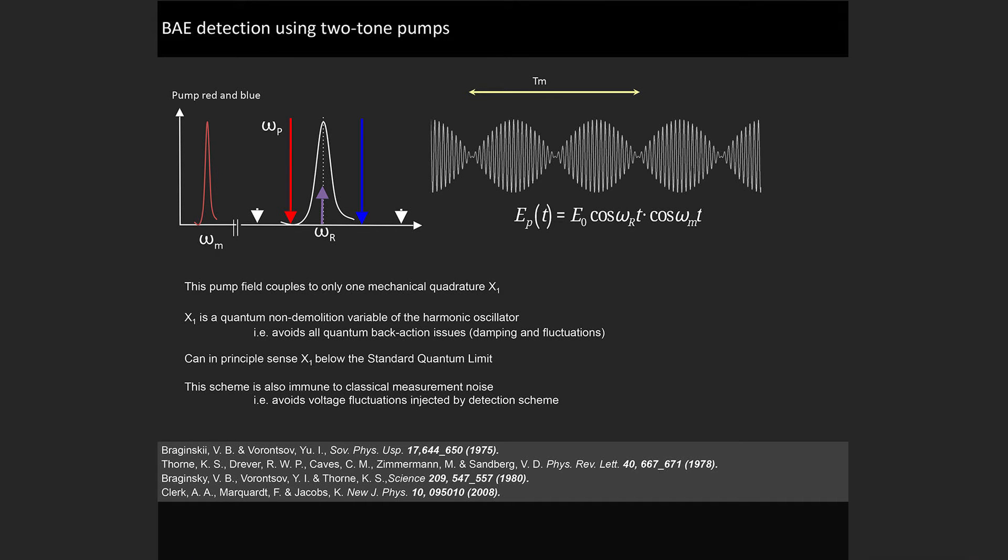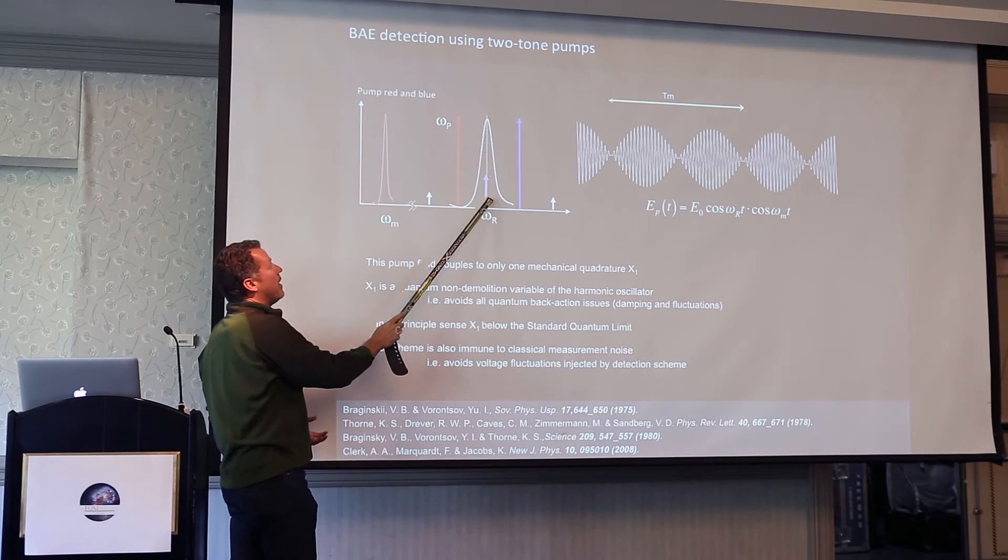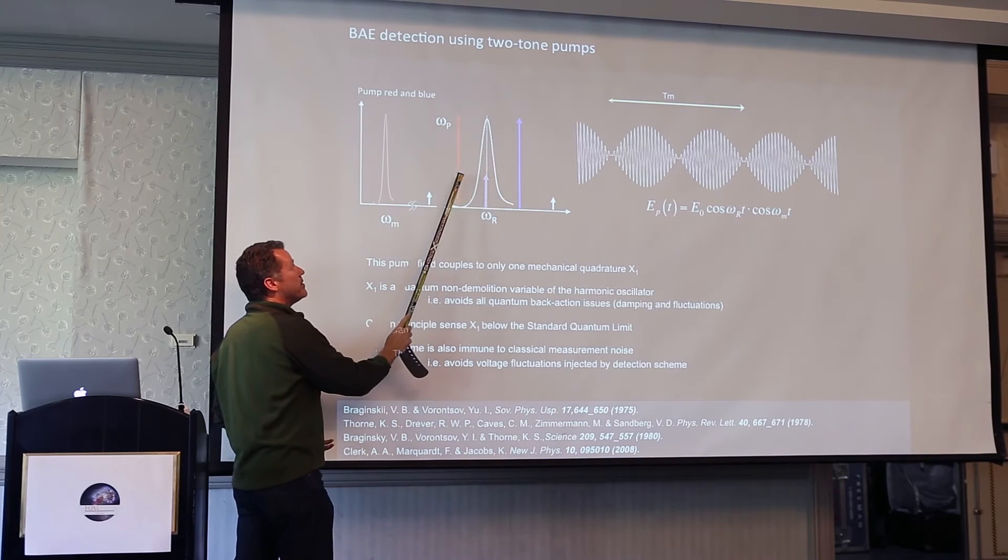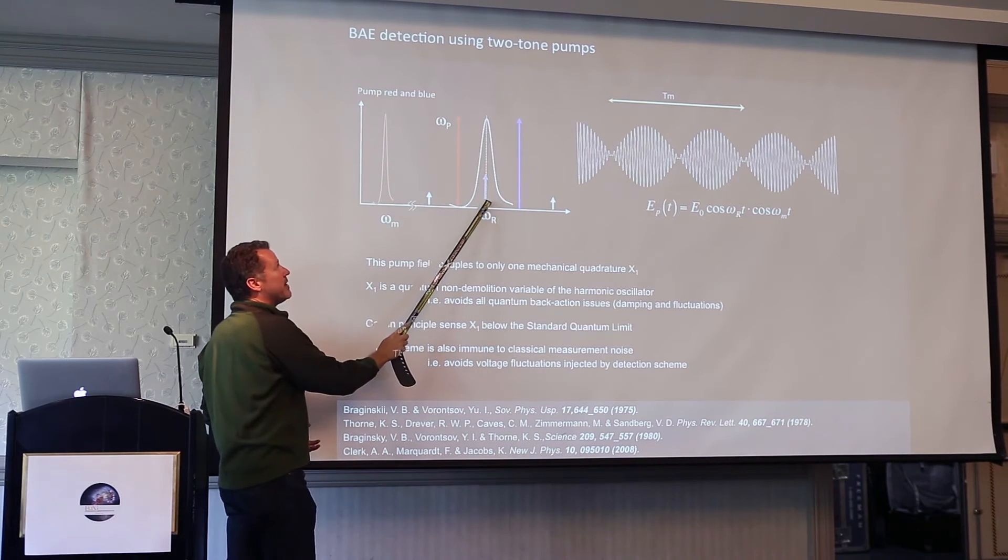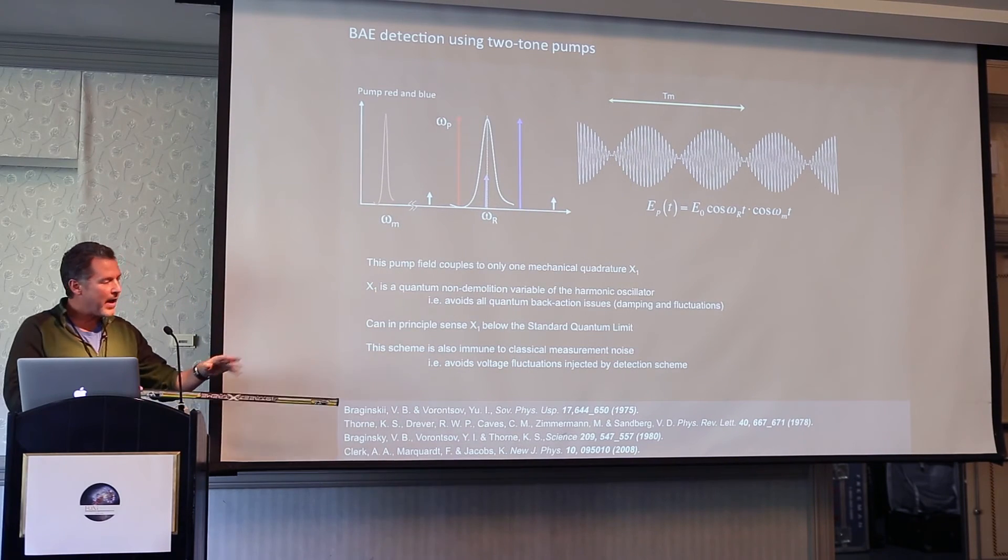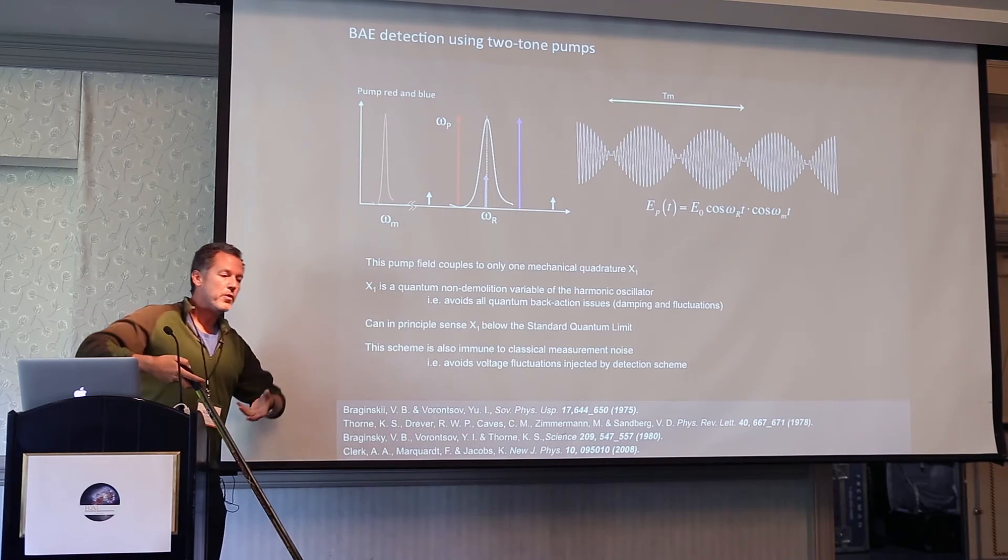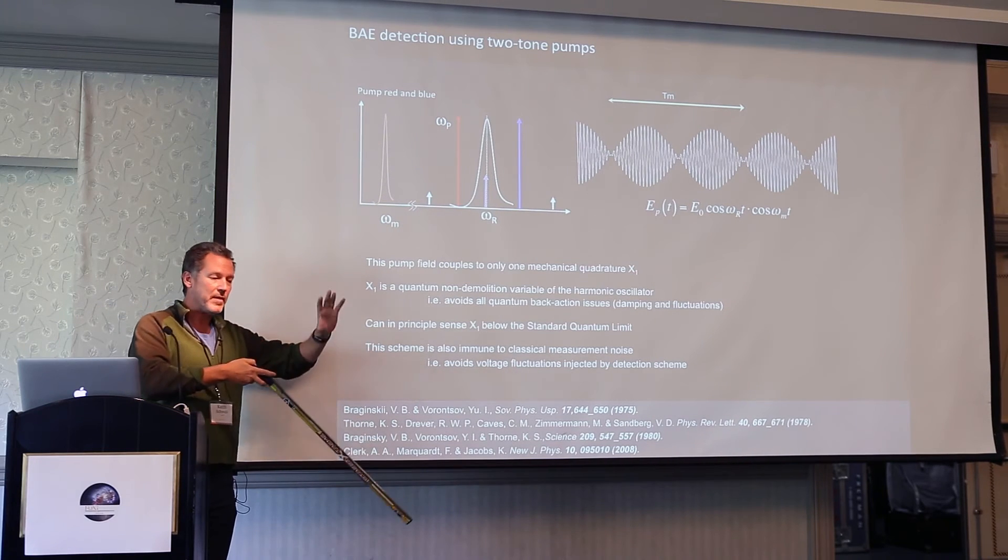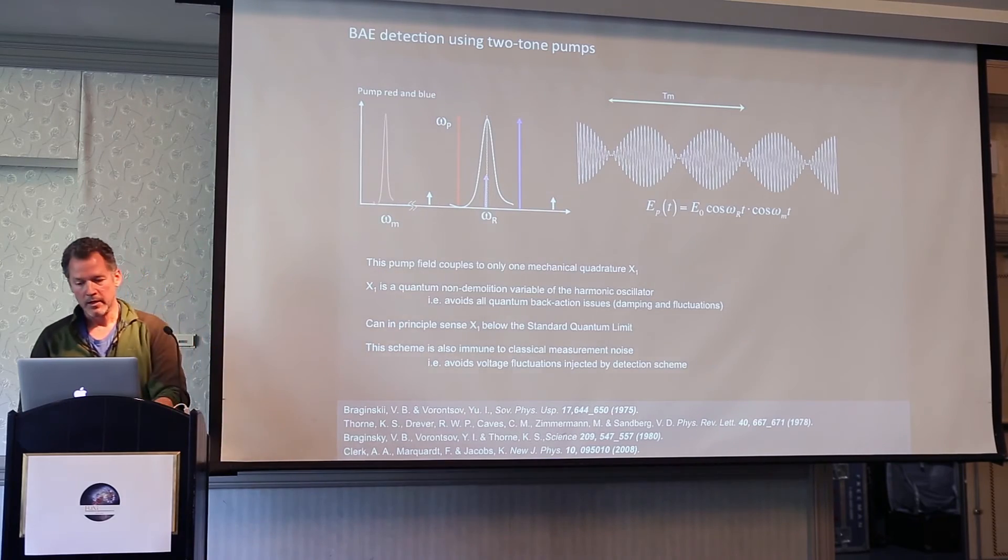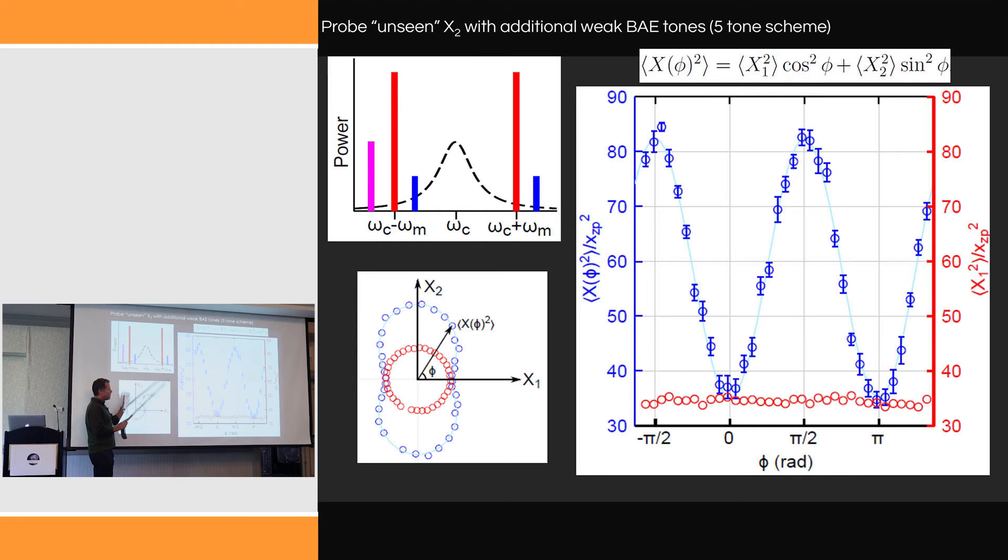You can apply two tones and do all this back action evasion stuff, quantum non-demolition measurements. Here's my electromagnetic cavity at five gigahertz, here's my mechanical mode, and I can apply two carefully prepared tones. The beat field inside the cavity is modulated at the mechanical frequency. If you work through all the math, that has really beautiful effects. I get information of one quadrature but put all the back action fluctuations from the electromagnetic field into the unobserved quadrature, and that's exactly what we see.